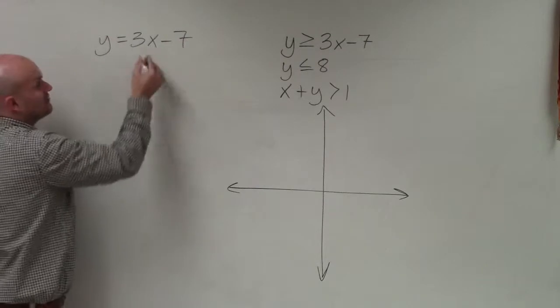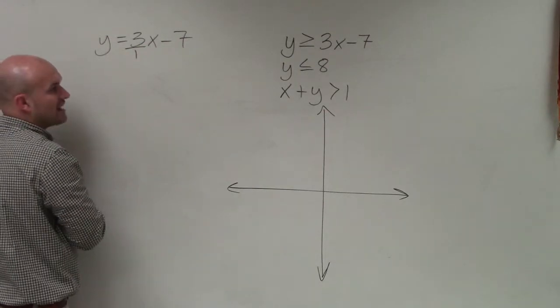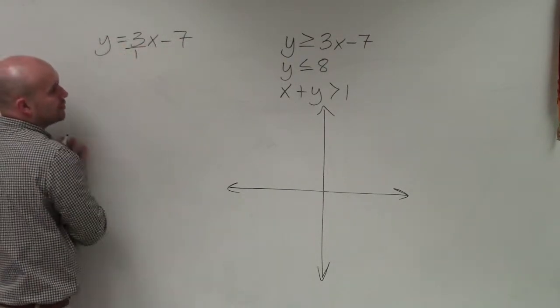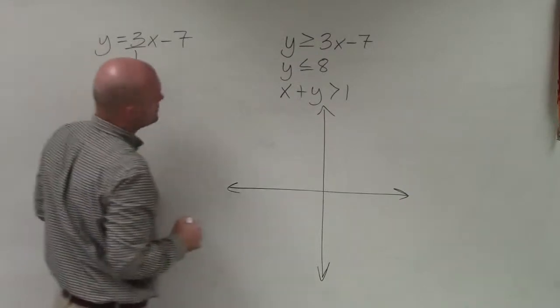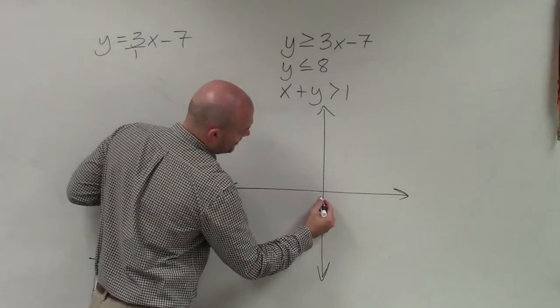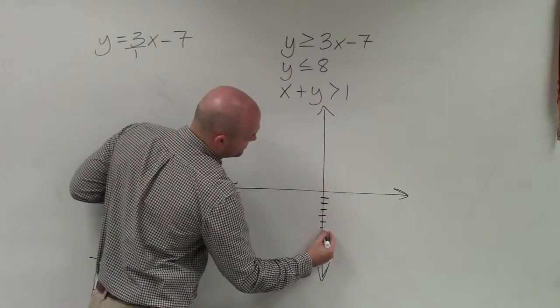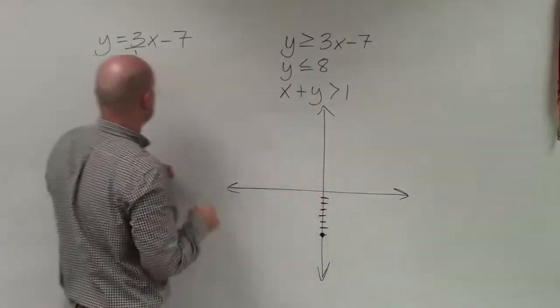Now remember, when graphing in slope-intercept form, we always want to write the slope as a fraction. So if it's a whole number, I can just put it over 1. So now the first step to do is plotting the y-intercept, which is at negative 1. Make a nice big dot, and there's my y-intercept.